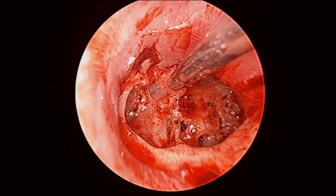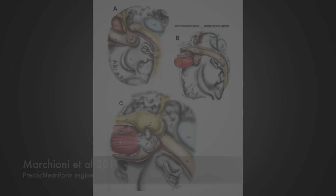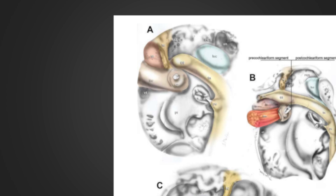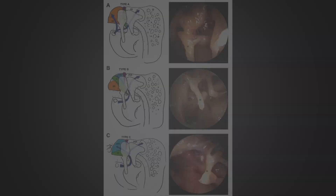In summary, the tympanic segment of the facial nerve was first described over ten years ago by Marchioni, and we looked at an example of the pre-cochleariform segment. Lyon and co-authors in 2018 subdivided the region, and we looked at a type B tensor fold in this example. Thanks very much for watching.